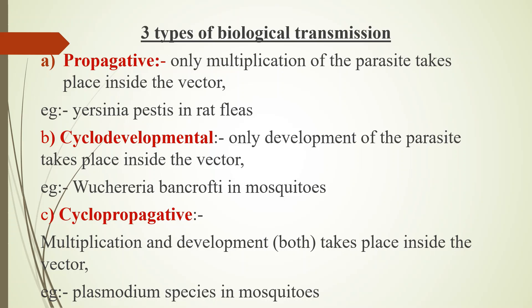Cyclo-propagative means both multiplication and development take place inside the vector. Example: Plasmodium species in mosquitoes.